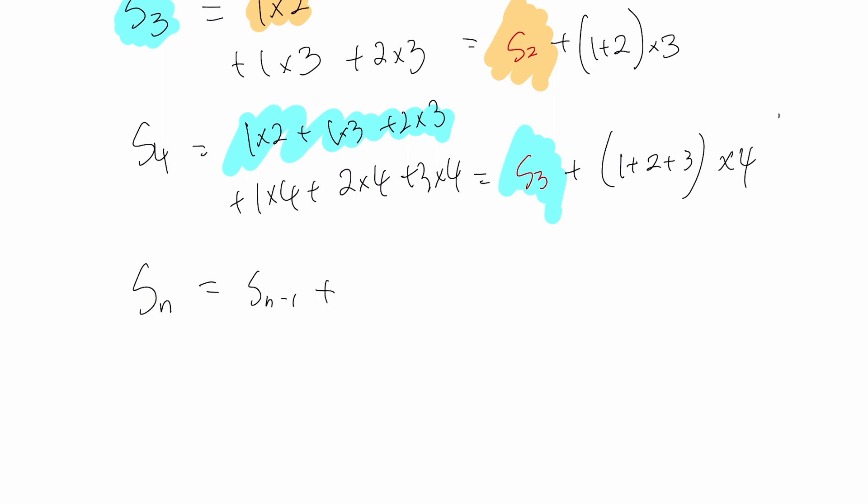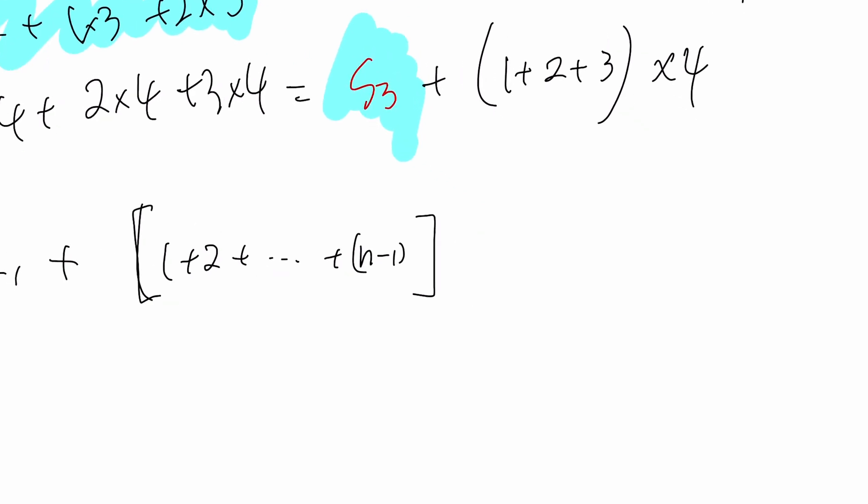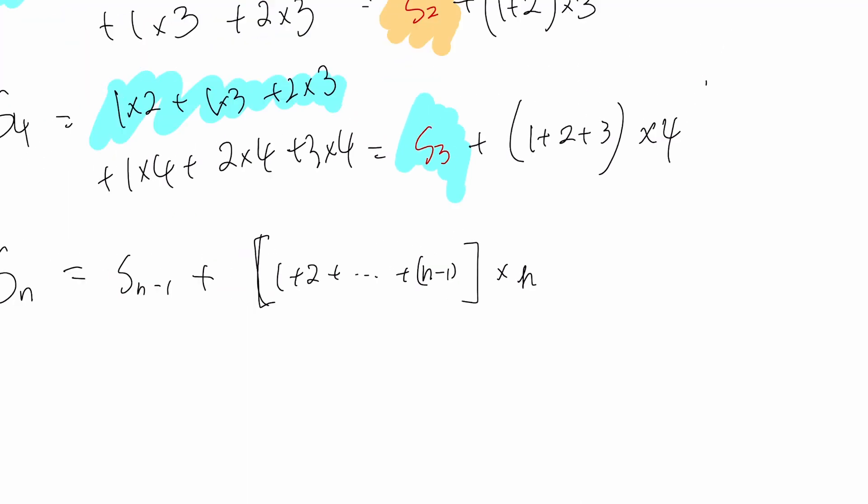We have to add 1 + 2 + ... + (n-1) because j has to be less than k. j cannot be equal to k, so n times n is not an option. That whole sum multiplies the k value, and the k value has to be the largest, which is n in this case.